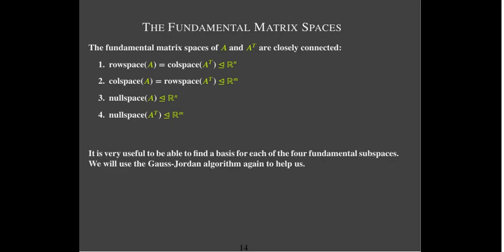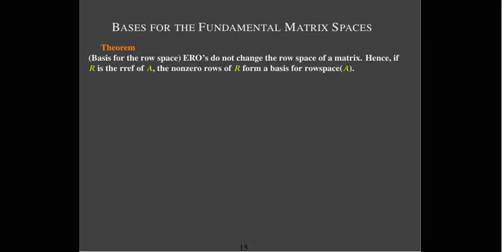We'd like to be able to compute a basis for each one of these four spaces, and we're going to rely on the Gauss-Jordan algorithm. Let's start with the row space. Elementary row operations do not change the row space of a matrix. So if R is the reduced row echelon form of A, I can just look at the non-zero rows of R, and those will form a basis for the row space of A.